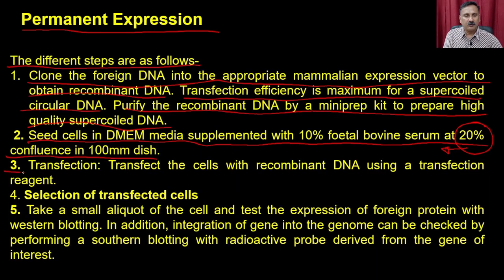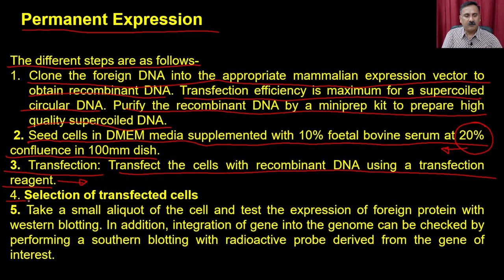20% confluency means the number of cells that are covering 20% of the area of that particular dish. Then you transfect the cells with recombinant DNA using a transfection reagent — you can use Lipofectamine, calcium phosphate-based transfections, or other methods discussed in the previous lecture. In step four, you do the selection of transfected cells.